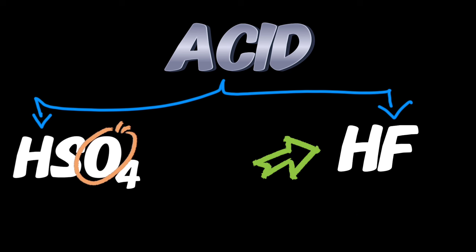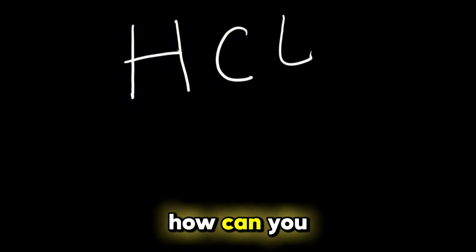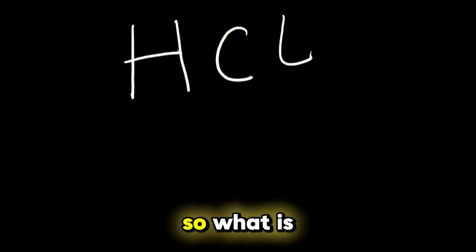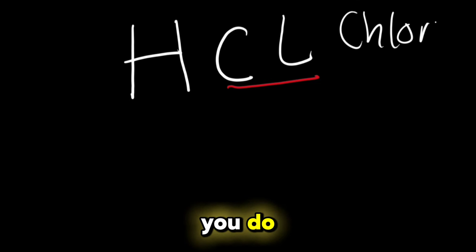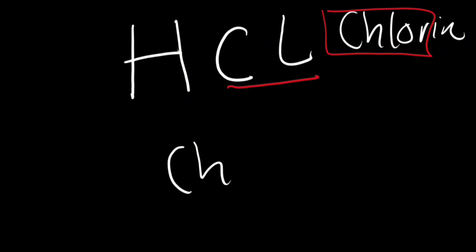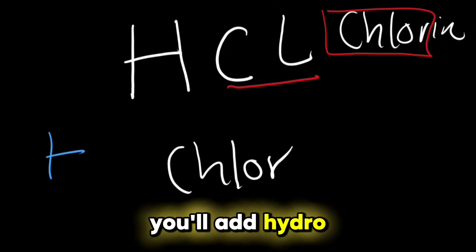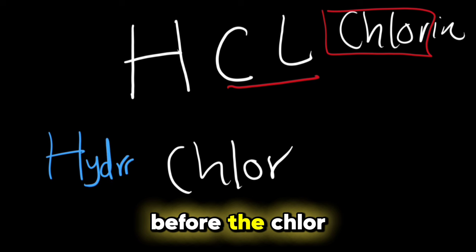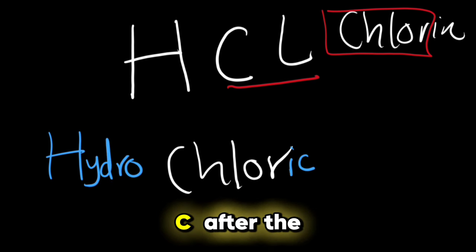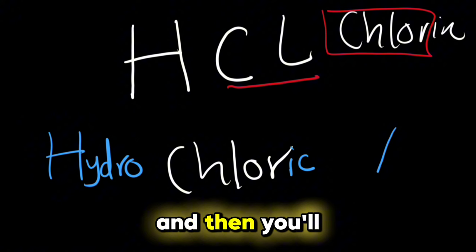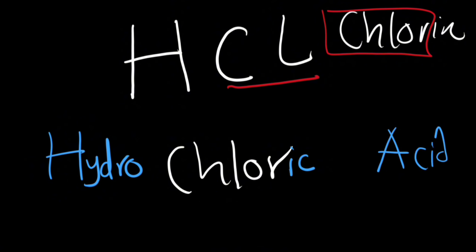Let's take for example HCl. How can we name this acid? This is chlorine. So what will you do? You just take the root, which is chlor, and you write it down. Now you will add hydro before the chlor, and then you will add ic after the chlor, and then you'll add acid. And that's how you can simply name the acid which has no oxygen.